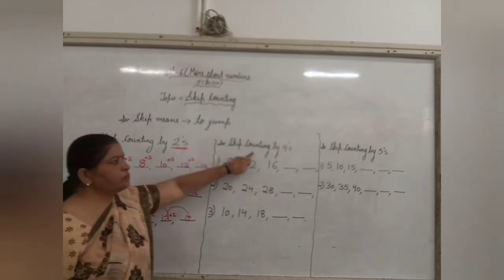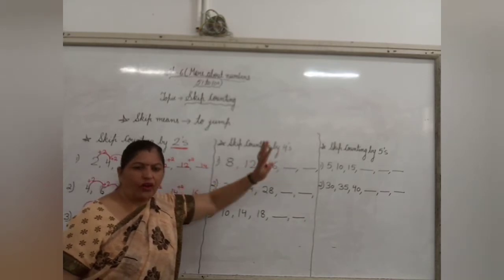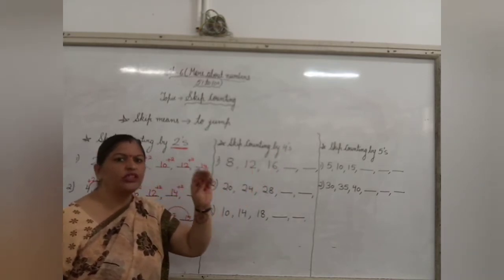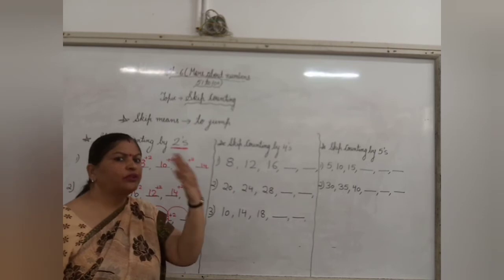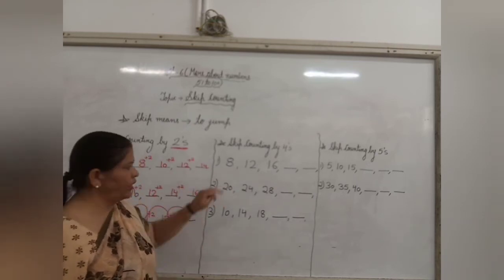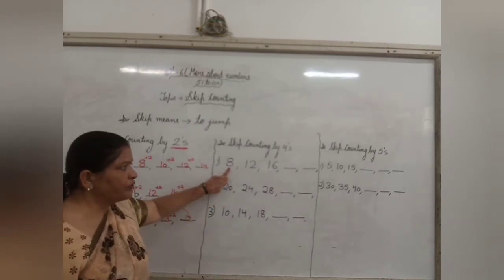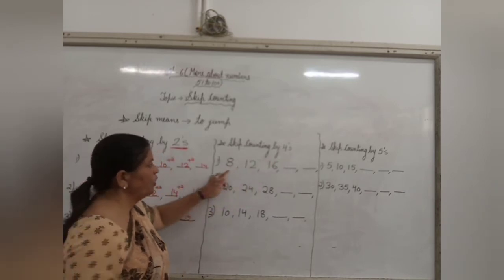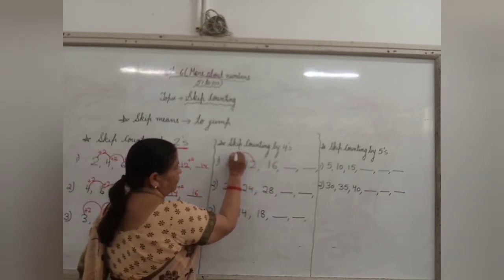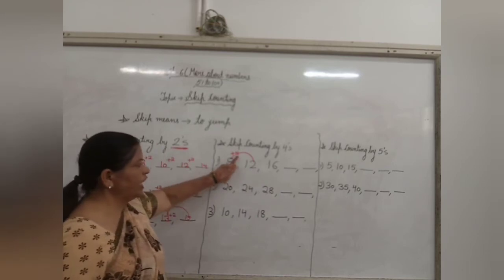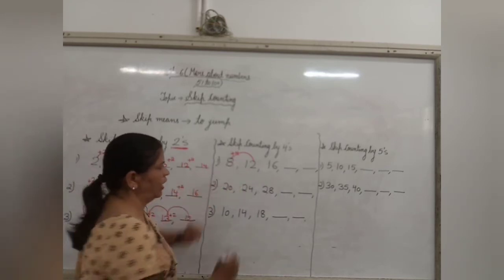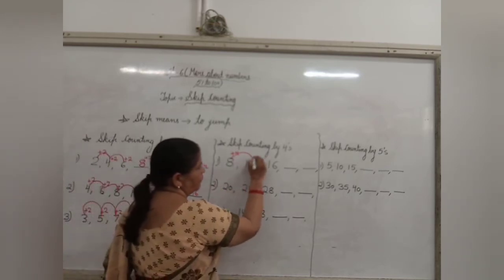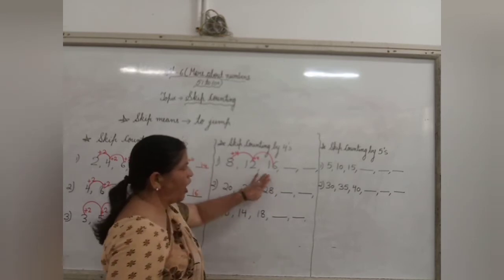Now in this second question, skip counting by 4. Now here the number has been given to you is 4. Means you have to jump to the 4th number of the given number. So 8. After that, you have to jump 4. So children, when you are jumping to 12, you have to add 4. So children, 8 plus 4 will be 12. Now 12 plus 4 will be 16. Now after 16,